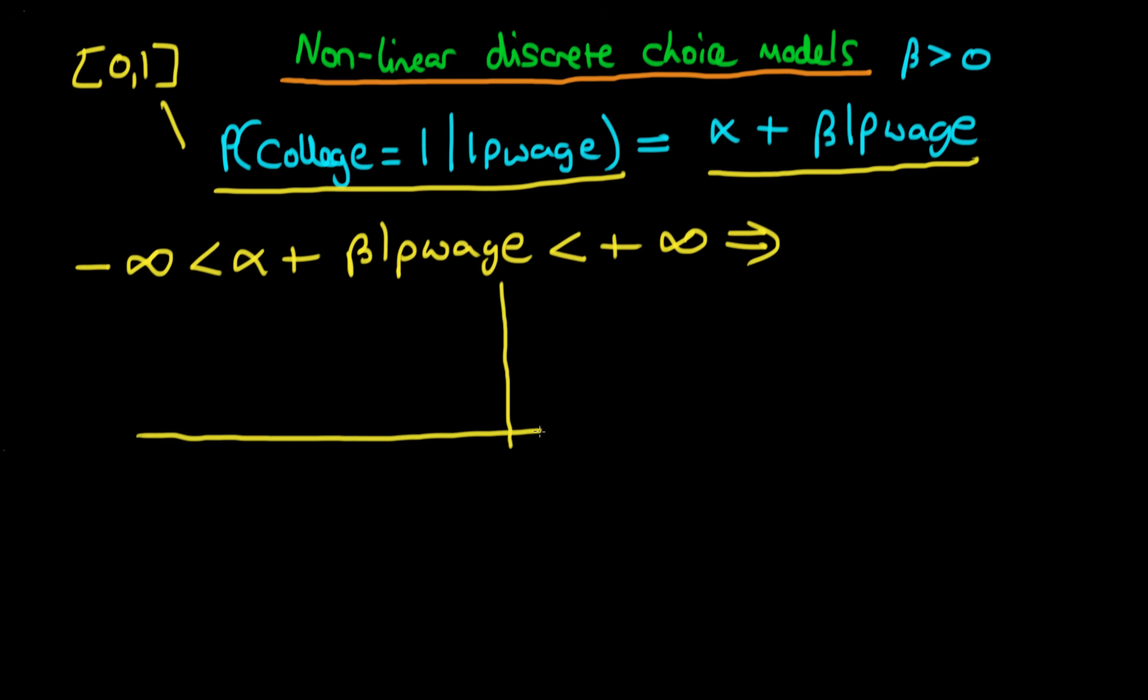The idea here is that our x-axis would be our linear combination of our independent variables—so alpha plus beta times the log of parental wage—and the y-axis here will just be whether an individual goes to college or not.